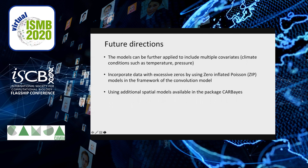For future directions, we plan to apply different spatial models, including ones based on the zero-inflated Poisson distribution as a convolution model. Additional data will be very helpful, and additional spatial models can be further applied for multiple covariates — climate conditions, temperature, and others. That concludes my presentation. Thank you for your attention.